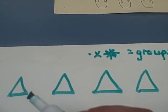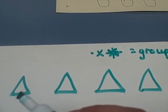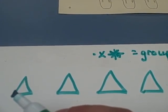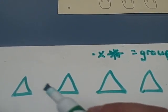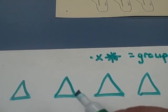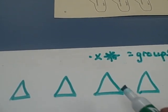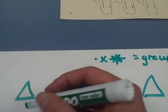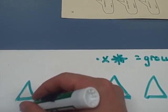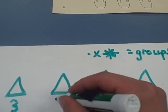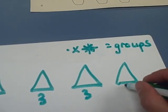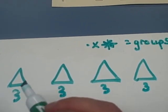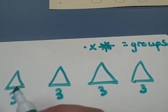Let's use sides. This triangle has three sides: one, two, three. And actually all triangles have three sides. That's going to make things pretty nice for me. Because if each triangle has three sides, then each triangle represents a group of three.